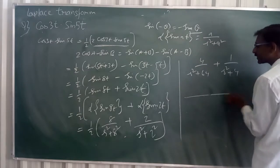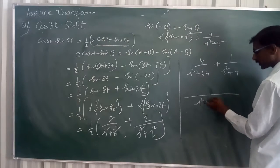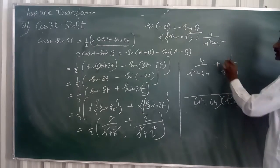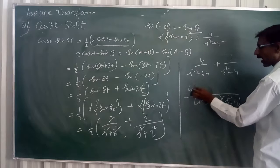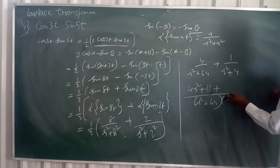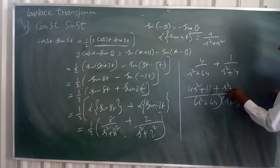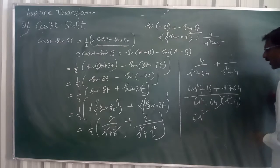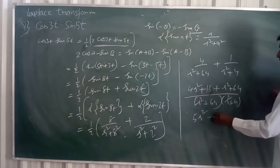By taking LCM, how much will come? s square plus 64 into s square plus 4. So this is multiplied by s square plus 4. This is multiplied by s square plus 64. So 4 s square plus s square, 5 s square. And this is how much, you tell me?